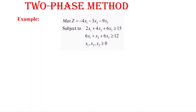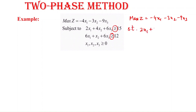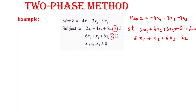Consider this example: maximize Z subject to the constraints. As we can notice, the constraints have greater-than-or-equal-to signs, so we will be subtracting the surplus variable to write it in standard form. The standard form would be: maximize Z = -4x1 - 3x2 - 9x3, subject to 2x1 + 4x2 + 6x3 - s1 = 15, and the other constraint minus s2 = 12. Whenever we subtract a surplus variable, we always add the artificial variables.